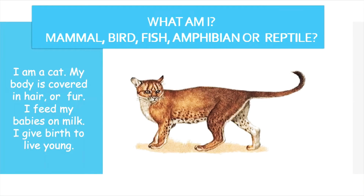I am a cat. My body is covered in hair or fur. I feed my babies on milk and I give birth to live young. Which animal am I? The clue: I feed my babies on milk and give birth to live young — that means a cat is a mammal.